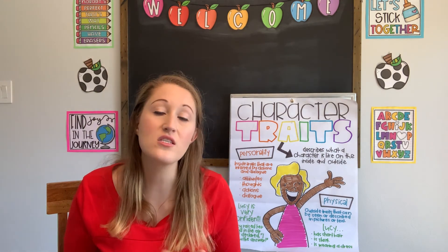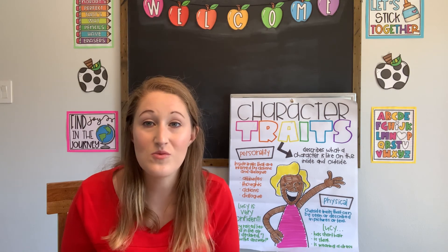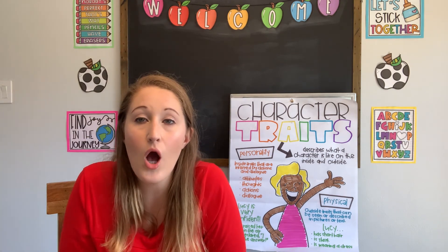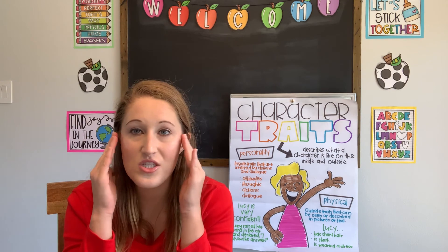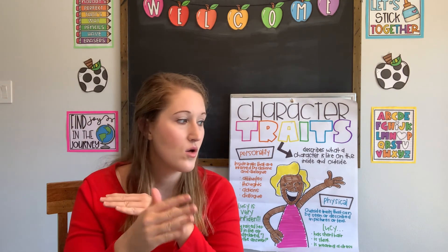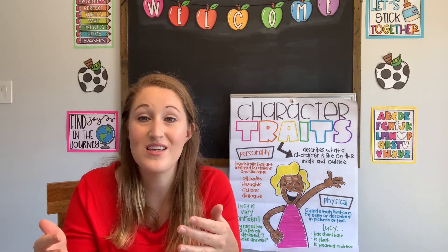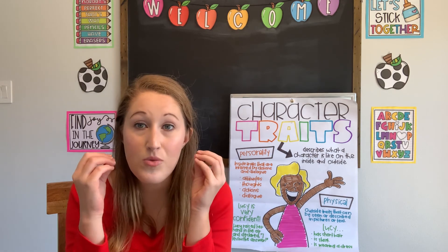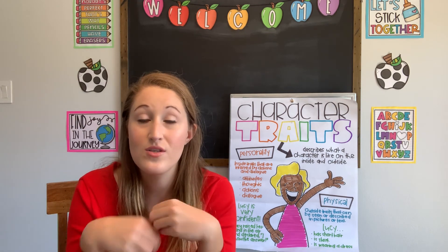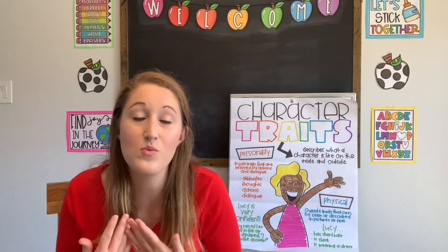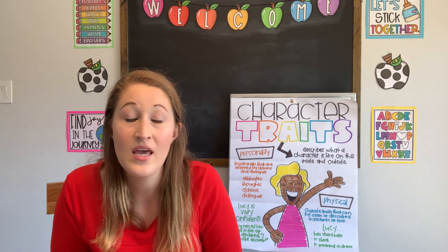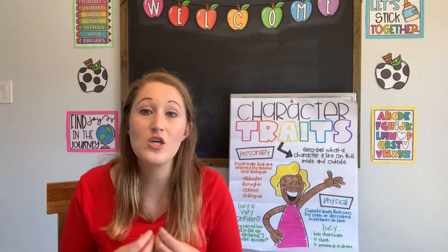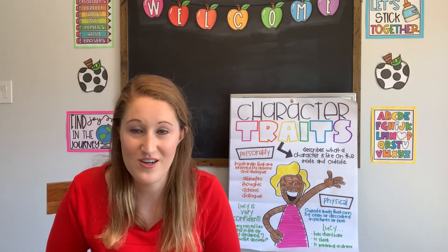As you can see, just based on text, we can infer things about these characters. We're using the words as reference, but also our schema — that knowledge we have inside our brain, whether from reading a similar book, watching a movie where something similar happens, or experiencing it ourselves. We keep those memories and relate them to how certain things are. If someone's really nice or being mean, we know what that looks like because we've experienced it ourselves.